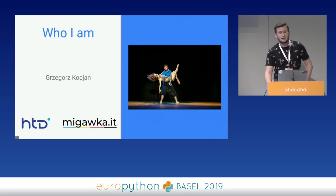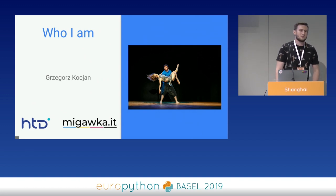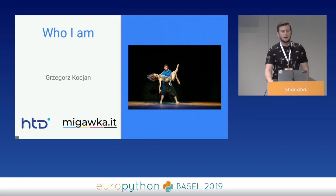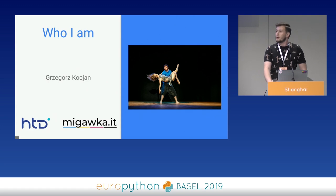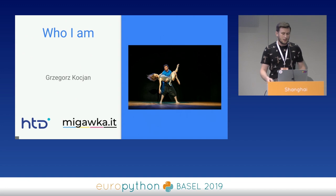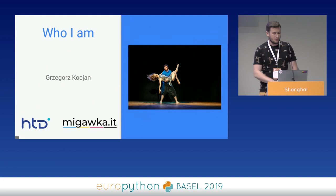My name is Grzegorz Kocian, and I'm from Poland. If you find my name difficult to pronounce, I'm from the city of Łódź — have luck! But for simplification, to make life easier, you can call me Greg. Eight years of programming in Python is a great adventure for me, and I'm really happy that I met Python as my first commercial programming language. Currently, I'm working at SDT, and I share my free time creating the local IT community Migafka IT, and dancing modern dance with my wife.